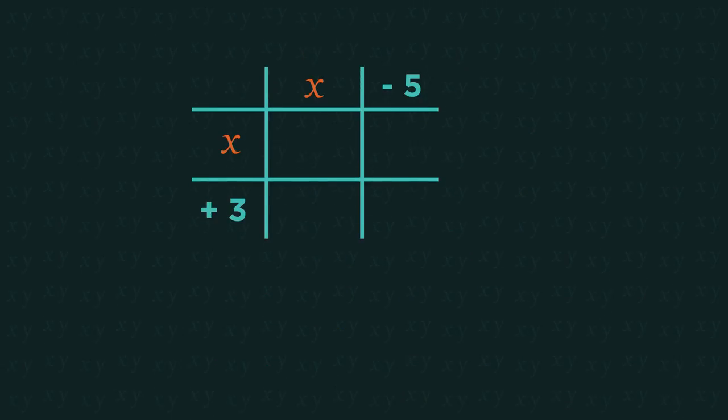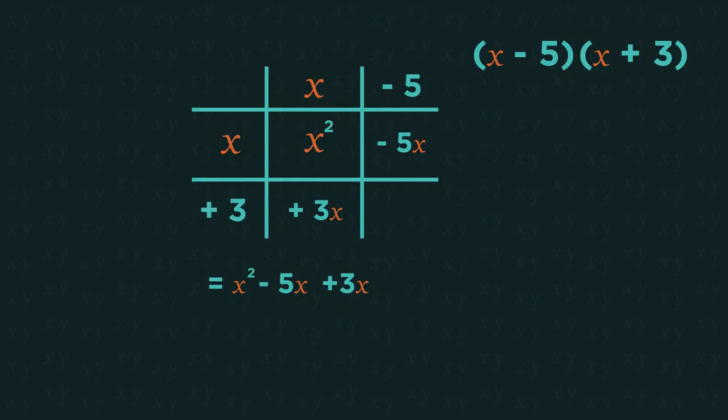The second method is by splitting up each bracket into a grid, and then just multiply each bit together. x multiplied by x gives x squared, x times negative 5 is negative 5x, 3 times x is 3x, and 3 times negative 5 is negative 15.